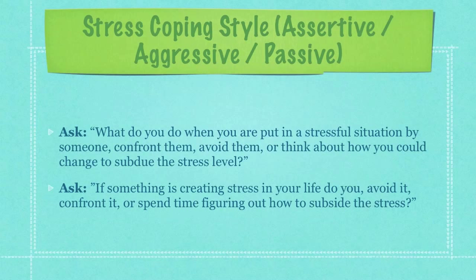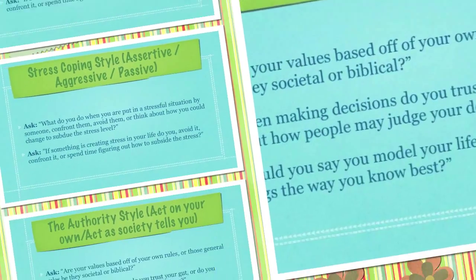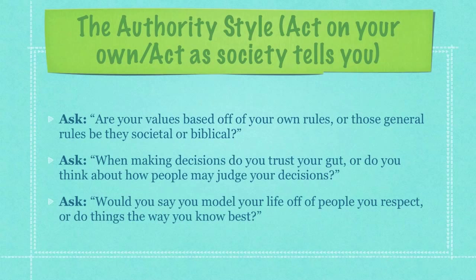Or you could ask: if something is creating stress in your life, do you avoid it, confront it, or spend time figuring out how to subside the stress? Then you have the authority style, meaning what authority governs a person's decision-making. I very strongly make decisions based off of my own internal values, meaning I'm self-referent. Others rely heavily on the general values of society as a whole — they believe everyone should follow a strict set of rules and live in a world of shoulds and should-nots. To find out what somebody is, just ask: are your values based off of your own rules or those general rules, be they societal or biblical? Or more simply: when making decisions, do you trust your gut or think about how people may judge your decisions?